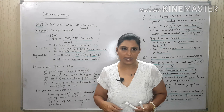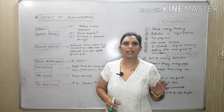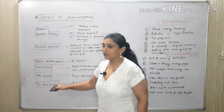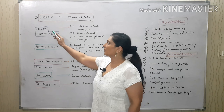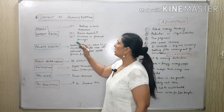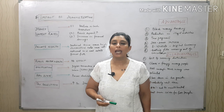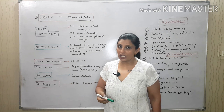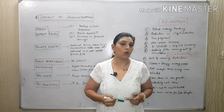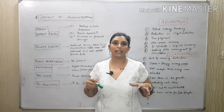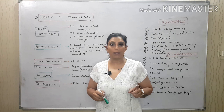Now the impact of demonetization: there are six key points. First, money and interest rates. There was a decline in cash transactions — people did not have enough money and were standing in long queues to exchange currency. Bank deposits increased because everyone was exchanging old currency for new, and everyone had to declare their income. The intention was to curb black money.